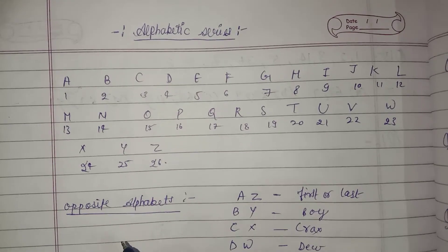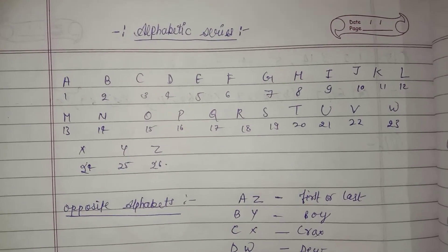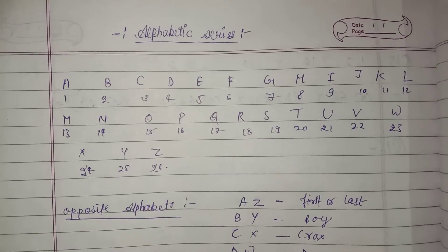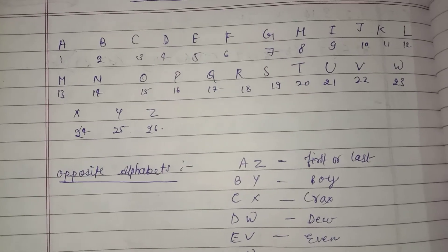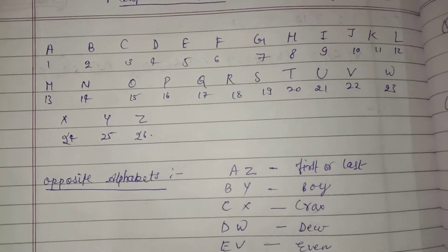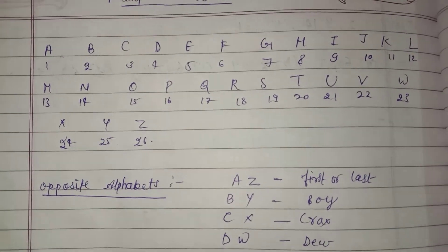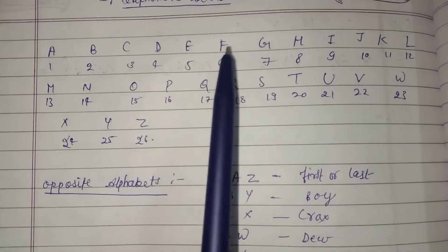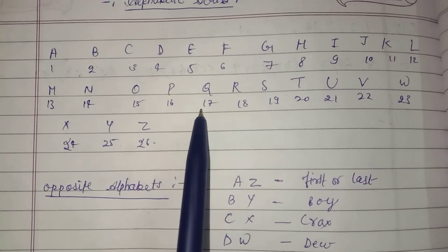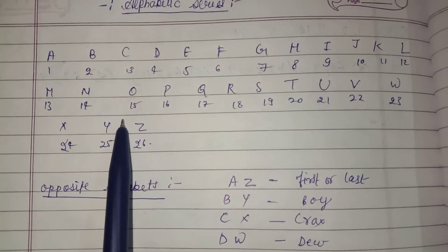In the alphabetic series, you should remember all the alphabets and their numbers. First of all, the numbers are 1 to 26 for the A to Z series. For example, F is number 6, G is 7, Q is 17, O is 15. So you will learn them.